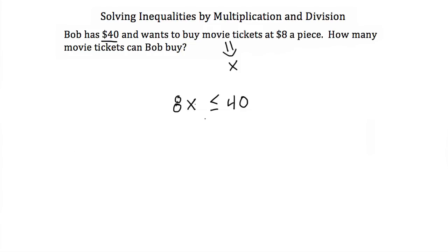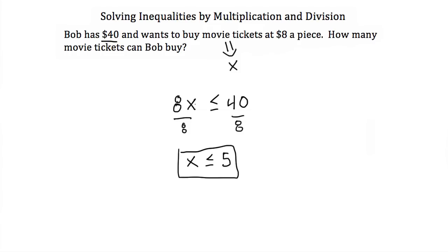To solve for x, or the number of movie tickets that Bob buys, we divide both sides by 8 and we get x has to be less than or equal to 5. So Bob can buy at maximum 5 movie tickets. And that completes the tutorial on solving inequalities by multiplication and division.